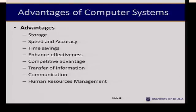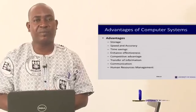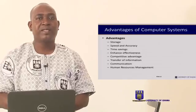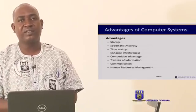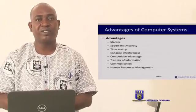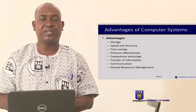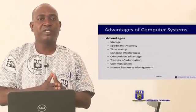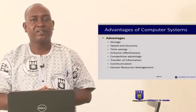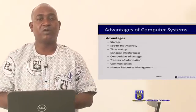Starting with storage — the computer system provides us with a very vast storage capacity that the human brain cannot retain. There are so many things we can save on a computer system that the human brain cannot hold. We started from bytes, moved to kilobytes, megabytes, gigabytes, and now we are in the dispensation of terabytes.